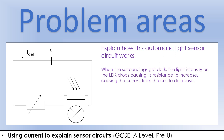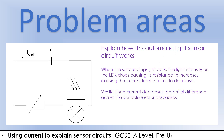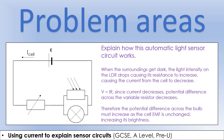The correct explanation starts the same: surroundings get dark, light intensity drops, LDR resistance increases, and that causes the current from the cell to decrease - we're drawing a smaller current because of bigger resistance. Now focus on the variable resistor: using V = IR, if the current through it decreases and its resistance hasn't changed, the potential difference across it must decrease. Since the EMF is unchanged, the potential difference across the bulb must increase. With a bigger potential difference and the same resistance, its brightness increases.